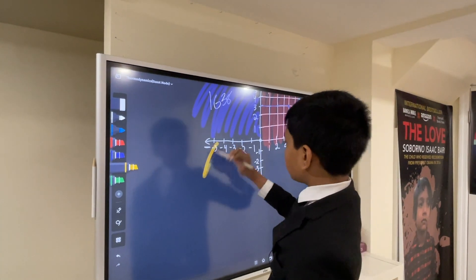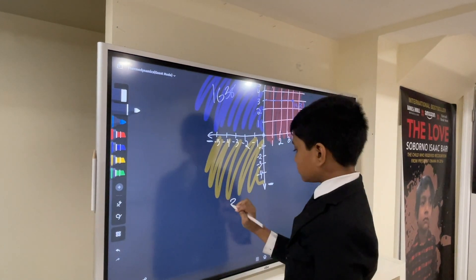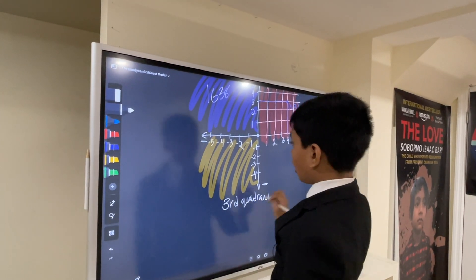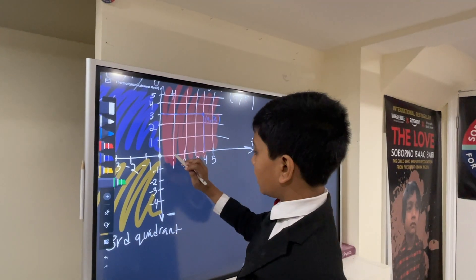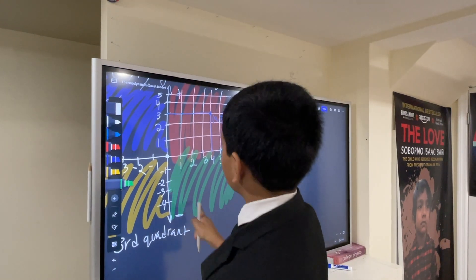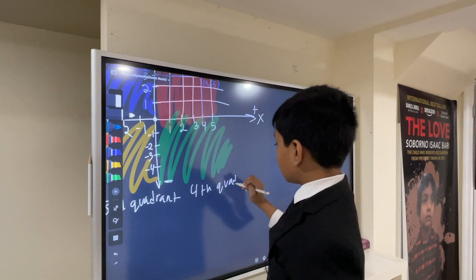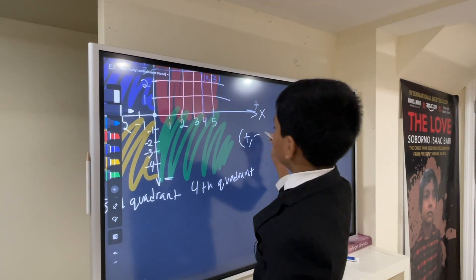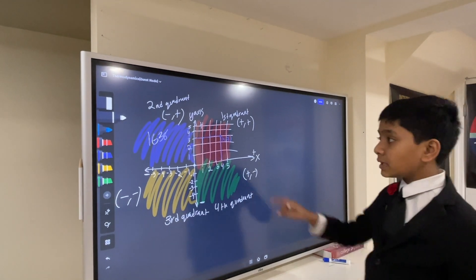This is what we would call the third quadrant, where both x and y are negative. And this is what we would call the fourth quadrant, where x is positive, but y is negative.